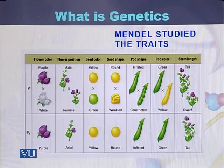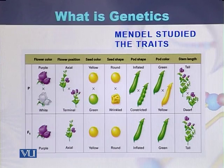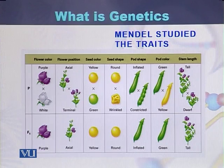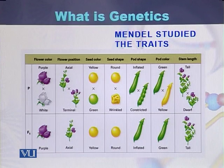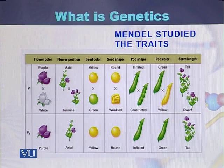Listing the characteristics of garden pea one by one: flower color was purple and white; flower position was axial and terminal; seed color was yellow and green; seed shape was round and wrinkled; pod shape was inflated and constricted; pod color was green and yellow; and plant height was tall and short. These were all the characteristics present in the garden pea.